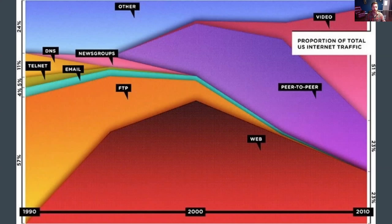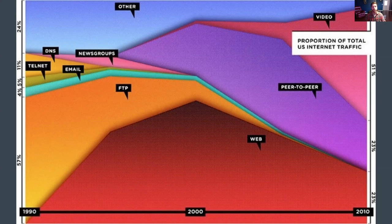The web has been replaced by peer-to-peer technology like Napster and Kazaa and other file-sharing systems, and then video streaming sites. If you were to look at this graph today, traditional web internet usage is pretty far down in favor of apps, and most of the time we access the internet it's going to be through our phones rather than a traditional desktop web experience.